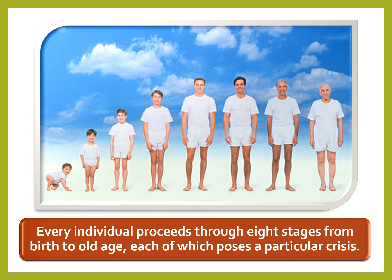Stage six is young adulthood, where intimacy and isolation are the focus of development. Stage seven is middle adulthood, where development centers around generativity versus stagnation or self-absorption. The last stage, stage eight, is late adulthood — the final stage proposed by Erikson centers around ego integrity and despair.